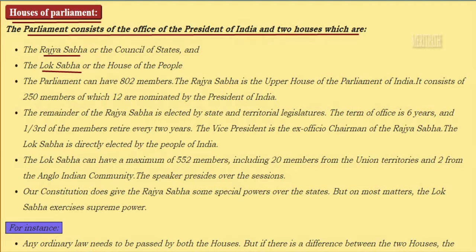Parliament consists of the office of the President of India and two houses which are known as Rajya Sabha or the Council of States, and Lok Sabha or the House of the People. Parliament can have 802 members.